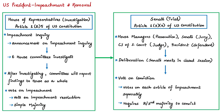The impeachment process in the United States begins in the House of Representatives. Any member can introduce an impeachment resolution on grounds of treason, bribery, or high crimes and misdemeanors. On September 24, 2019, the Speaker announced that the House would move forward with an official impeachment inquiry against the US president. Six House committees then continue their investigations under the umbrella of impeachment inquiry. The House Judiciary Committee can recommend whether there should be an impeachment and will report a resolution with specific allegations of misconduct.